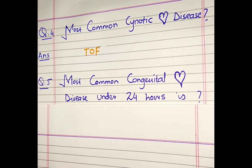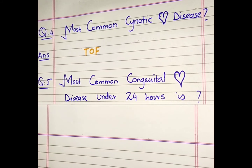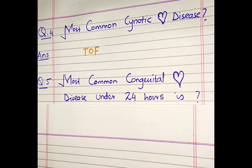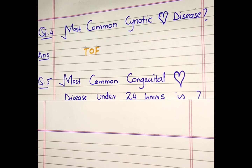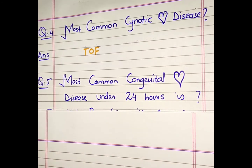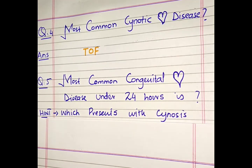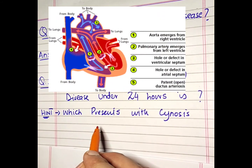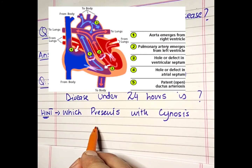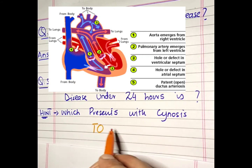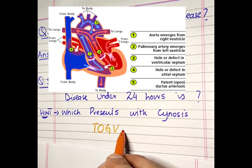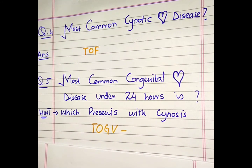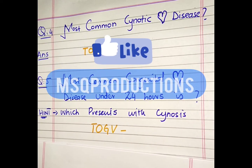The last question: What is the most common congenital heart defect presenting within 24 hours? That's a tricky one — it is Transposition of Great Vessels. The hint is that cyanosis will be present, and in infants presenting with cyanosis within 24 hours, you check the box for Transposition of Great Vessels or Arteries.